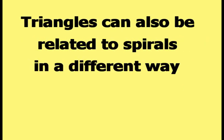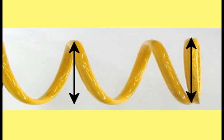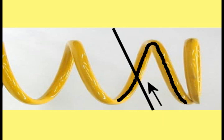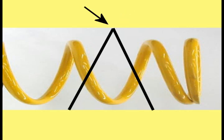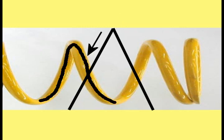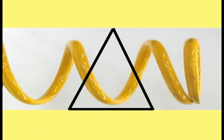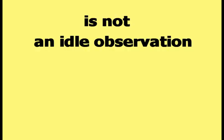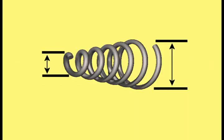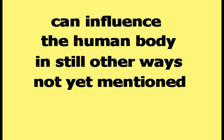Triangles can also be related to spirals in a different way. Here is a picture of a uniform diameter spiral. A line is drawn that begins below the spiral, travels diagonally upward to cut through one coil, and ends on the other side. Another line begins where the first stopped, slants diagonally downward in the opposite direction through a neighboring coil, and stops below the spiral. Connecting the free ends of these two lines forms a triangular shape. Noticing that triangles can be interwoven with the coils of a spiral provides further insight into how the human body is constructed and behaves.